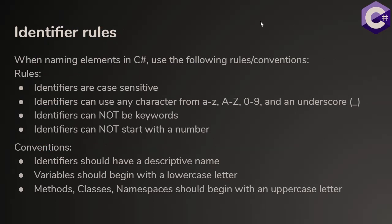Let's talk about our identifier rules. When we name an element in C#, we have to follow some rules. Identifiers are case sensitive. So if I am creating a lowercase age variable and an uppercase age variable, those two variables are unique and separate from one another. Identifiers can use any character from A to Z, lowercase or uppercase, any number 0 through 9, and an underscore character. However, identifiers cannot be keywords in the C# language. And identifiers cannot start with a number.